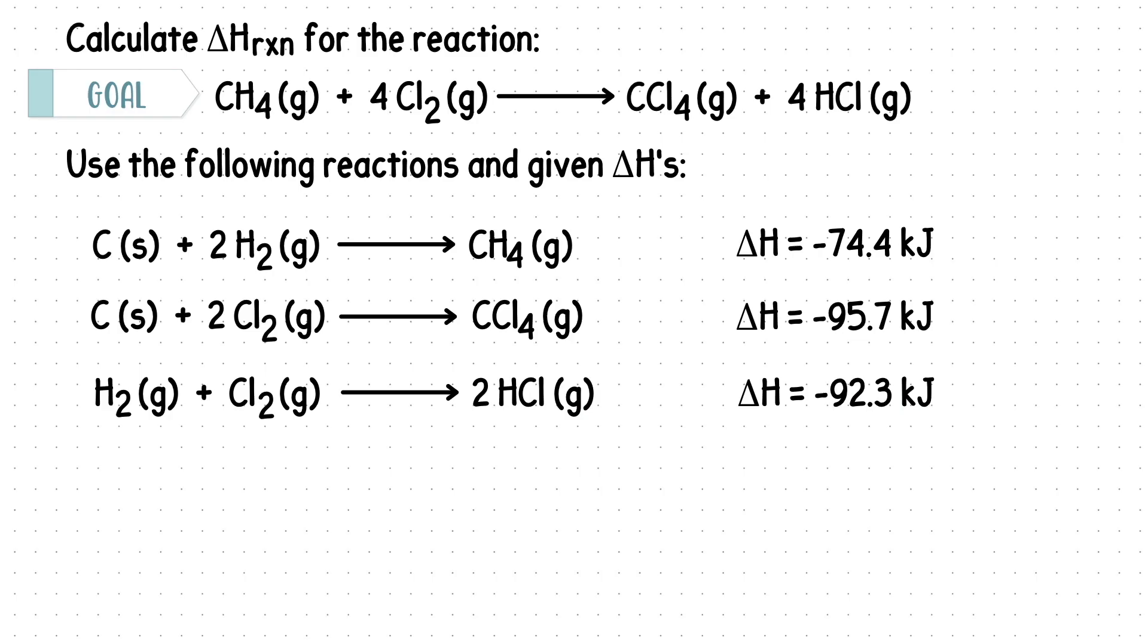Here's how to approach a Hess's Law question. Since we know this is our goal reaction, I like to start with locating each substance in the below reactions. Our first reactant of CH4 is here, but notice it's on the wrong side. We need CH4 to be on the reactant side, not the product side.